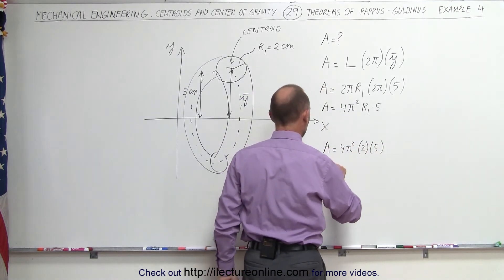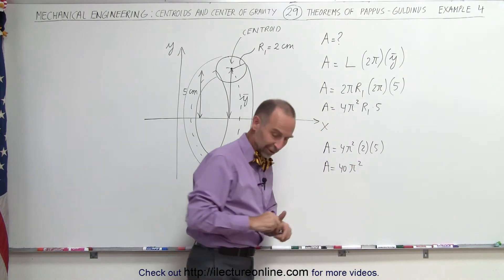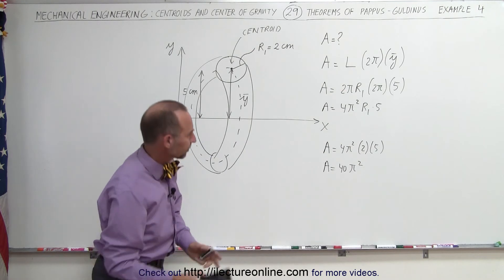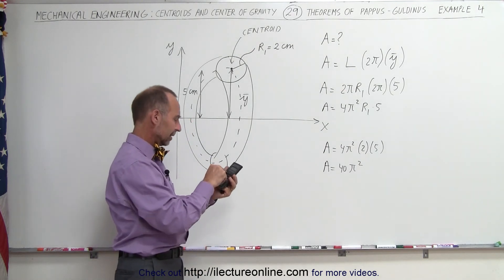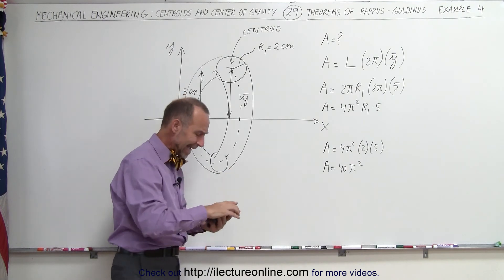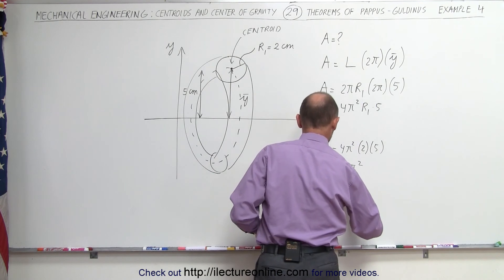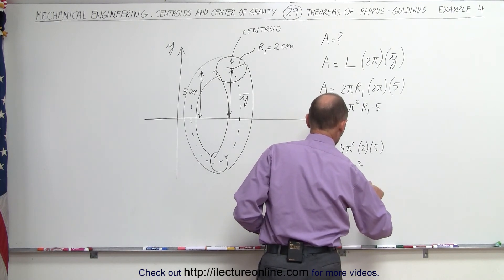That's 10 times 4, that's 40. A equals 40π². And if you'd like to know what that is equal to, let's take a calculator. Here, π² times 40 equals 395 square centimeters.